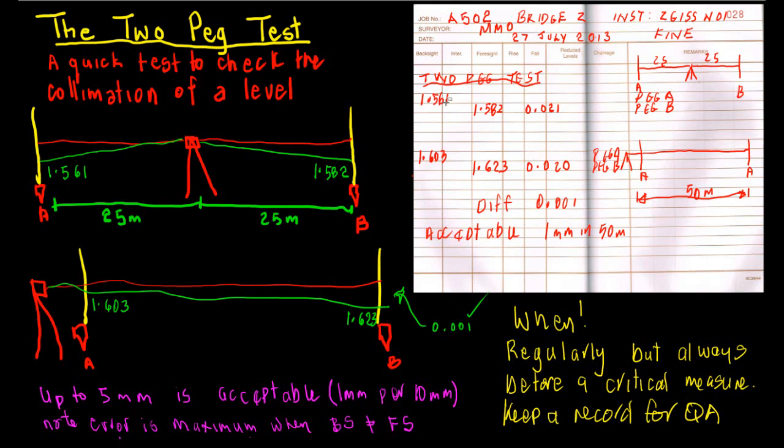I would write that down in my book here, 1.561. I would then look up again, take another reading, and hopefully it'll be 1.561. Check that I've actually written down 1.561, and then I'll move the staffman on.